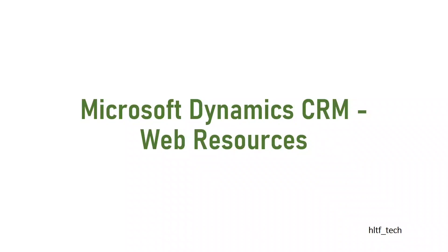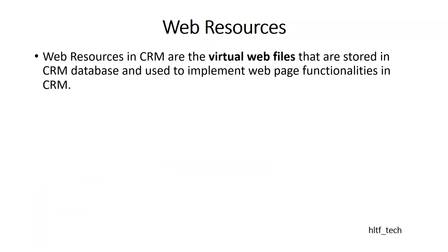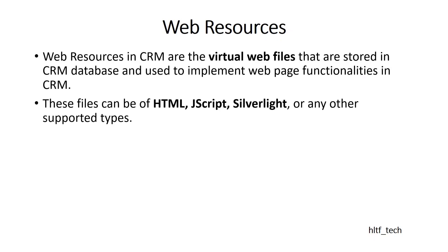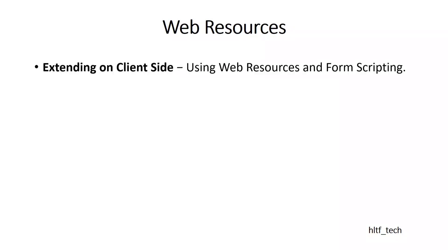So first of all, what are web resources in CRM? Web resources in CRM are the virtual web files that are stored in the CRM database and are used to implement web page functionalities in CRM. We are going to see different scenarios as well. The web resource files can be of HTML, JavaScript, Silverlight, or any other supported files. Among them, JavaScript is the most commonly used supported file type for web resources in CRM.